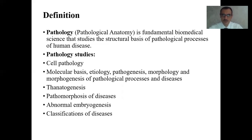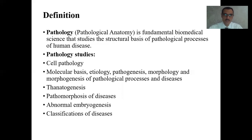This subject is known as pathological anatomy in our country as well as in Russia. In the United States and in Europe, it is also known as anatomic pathology or surgical pathology. It is a fundamental biomedical science that studies the structural basis of pathological processes of human disease. Branches include cell pathology, molecular pathology, etiology, pathogenesis, morphology and morphogenesis of pathological processes and diseases.